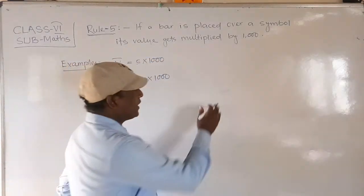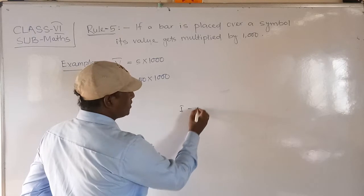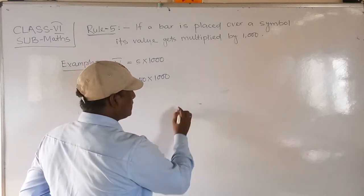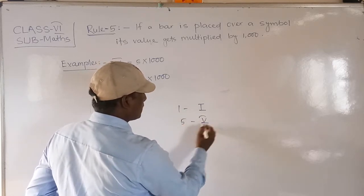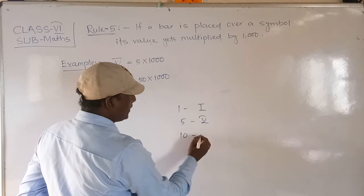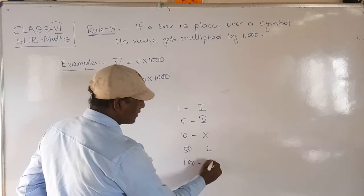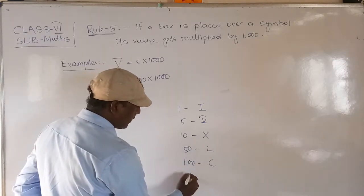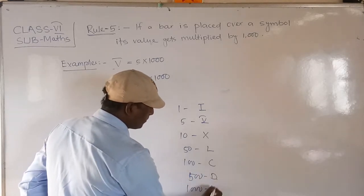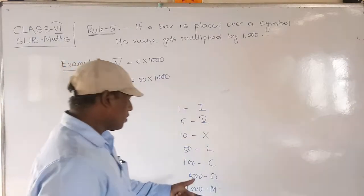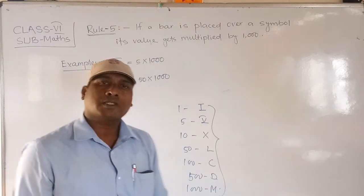Let me repeat the symbols once again. I means 1, 5 is written as V, 10 is written as X, 50 is written as L, 100 is written as C, 500 is written as D, and 1000 is written as M. By applying these symbols, we have to write all the Hindu-Arabic numbers.